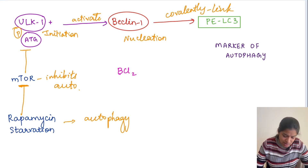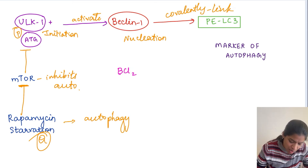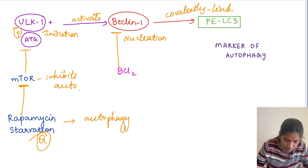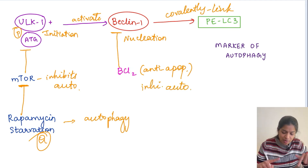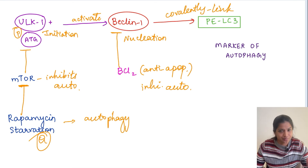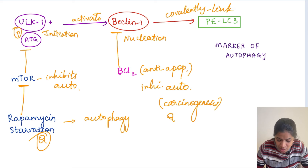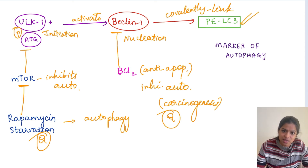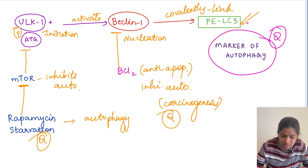This can be asked in various MCQ questions. The second inhibition point involves Beclin-1: whenever Beclin-1 meets BCL2 — an anti-apoptotic protein — it will actually inhibit autophagy. So whenever BCL2 and Beclin-1 meet, they inhibit autophagy. This has been implicated in carcinogenesis, and these can serve as targets to inhibit or activate autophagy. Lastly, PE-LC3, which is responsible for autophagosome formation, is called the marker of autophagy.